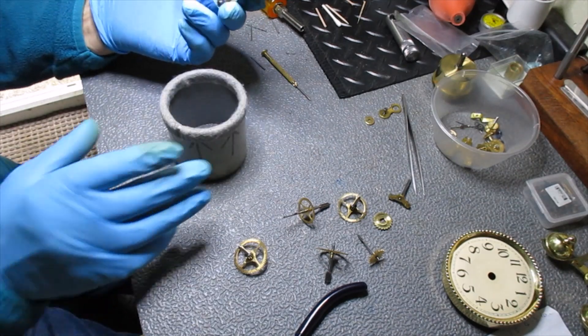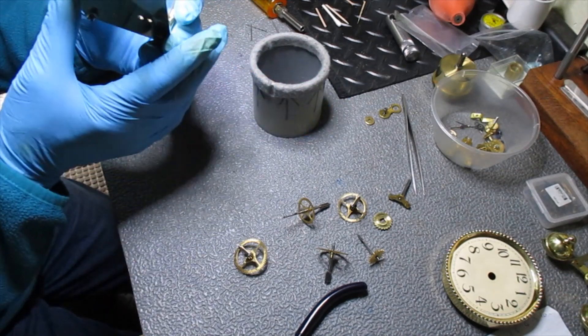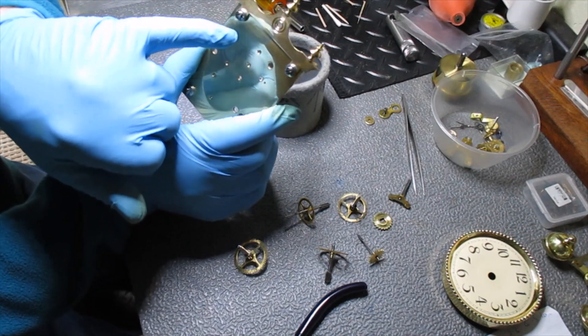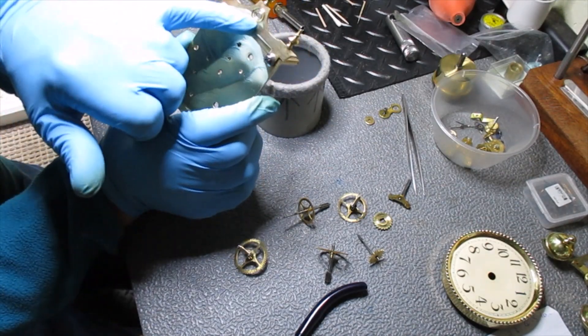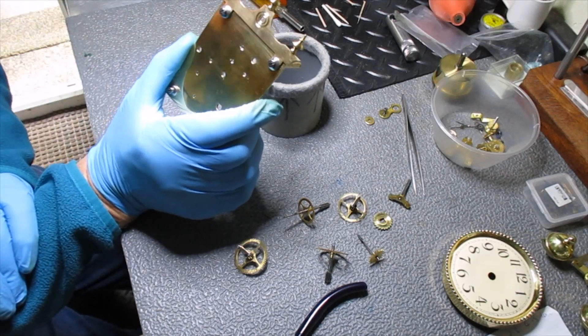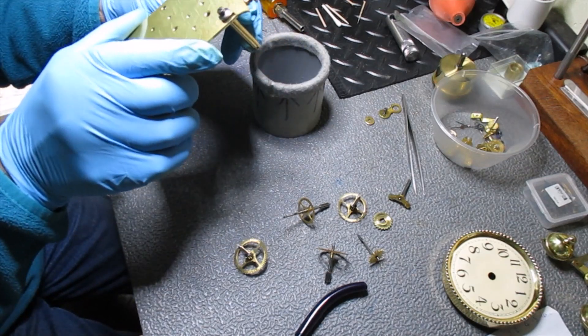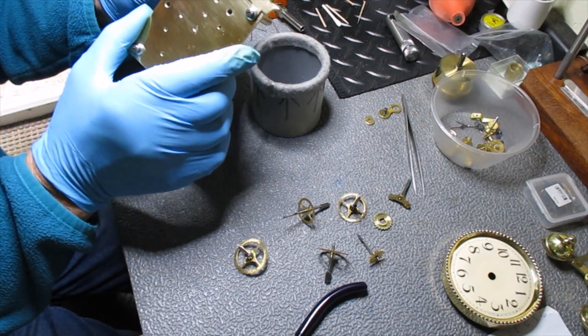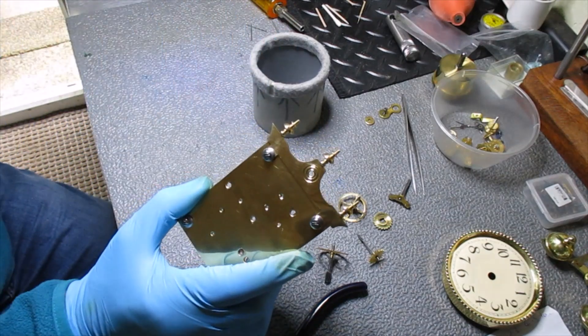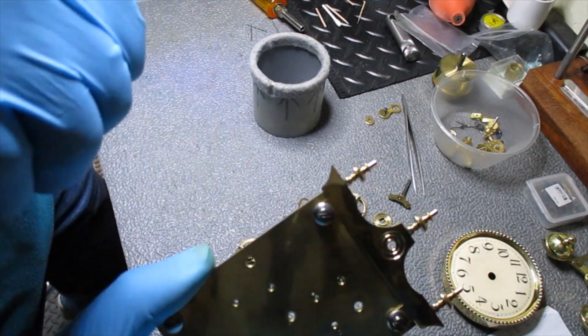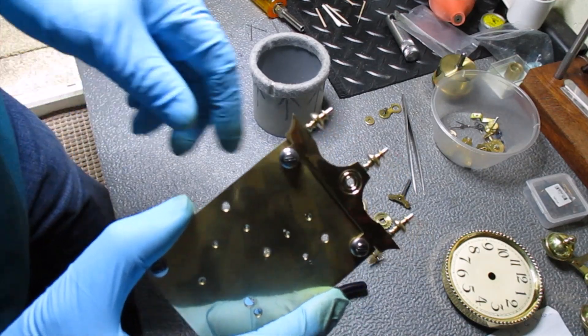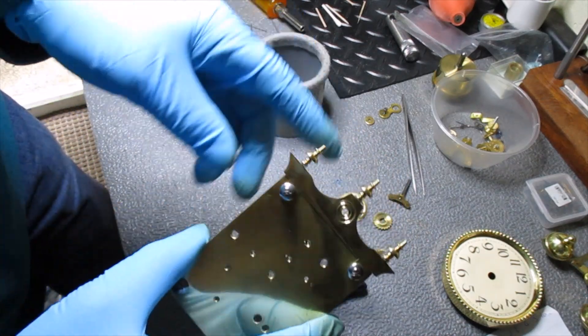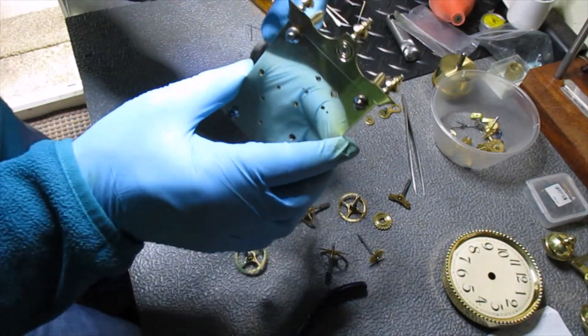You can tell whether it's the correct clock for the pendulum or not because it's the only one with the singular hole in the crown with two grooves around it. You can just see there, so you know it's the correct one for that pendulum.